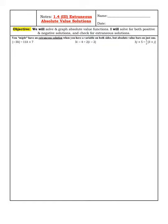That's because when you plug in your number, remember, absolute value always goes positive. So if you plug in a number to this side and it goes negative, but this side ends up going positive because you took the absolute value of it, then you have a positive number equaling a negative number, and that's why it's extraneous.